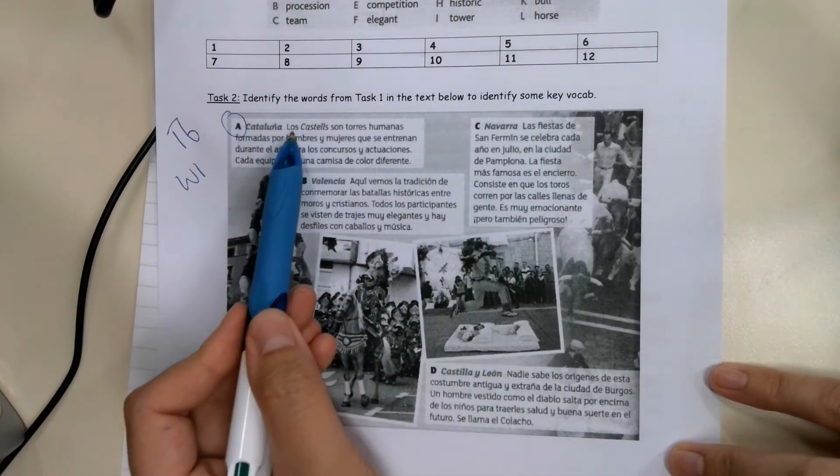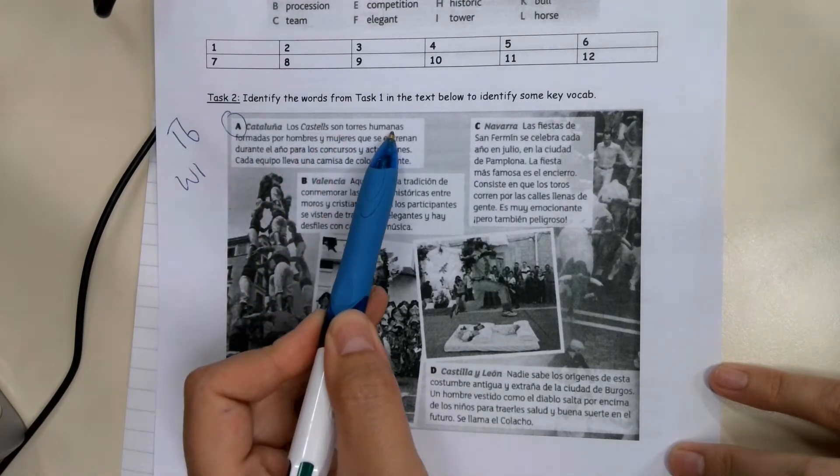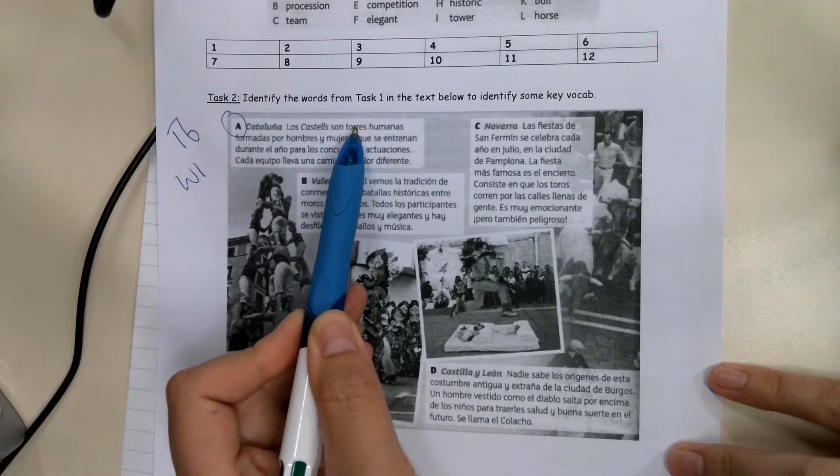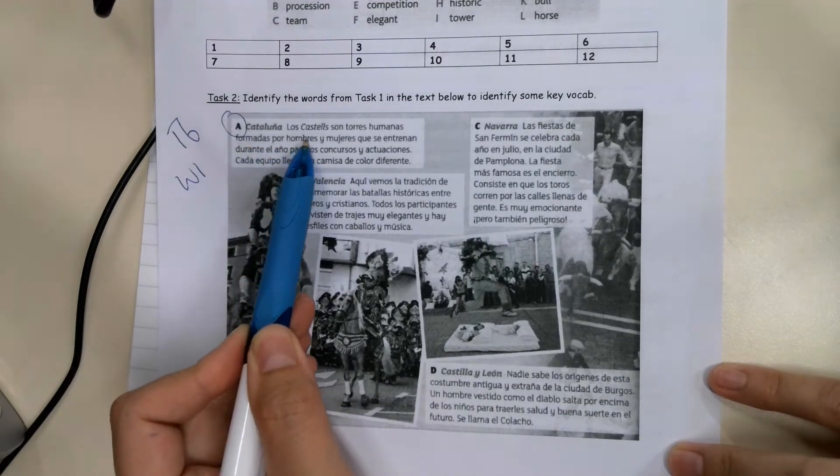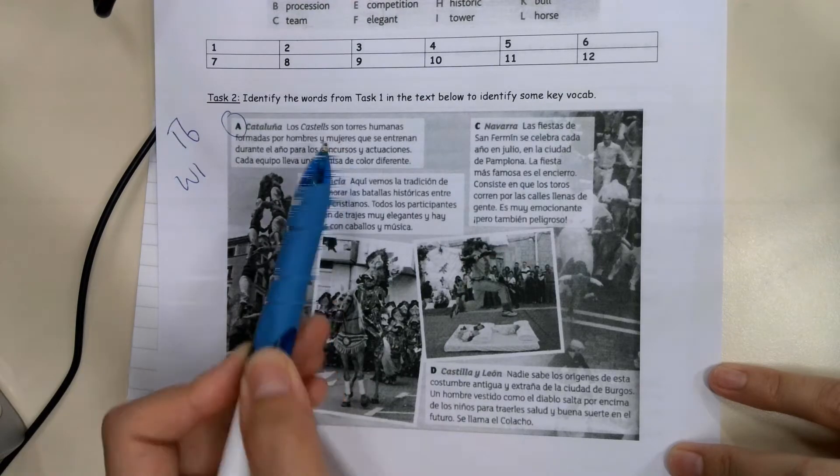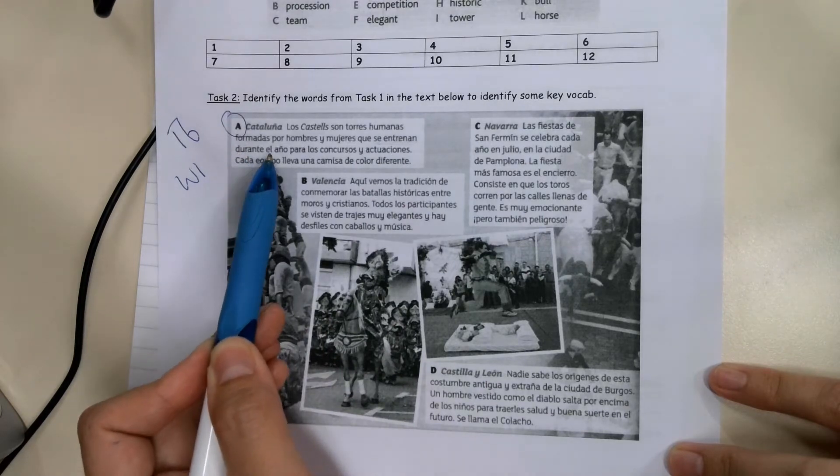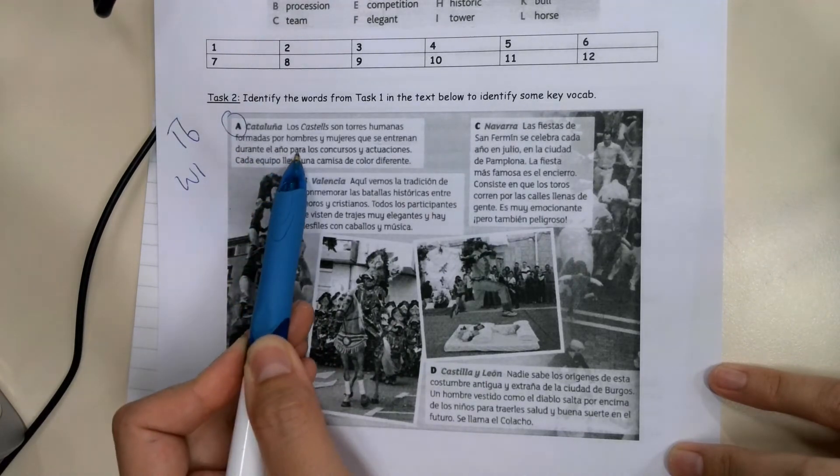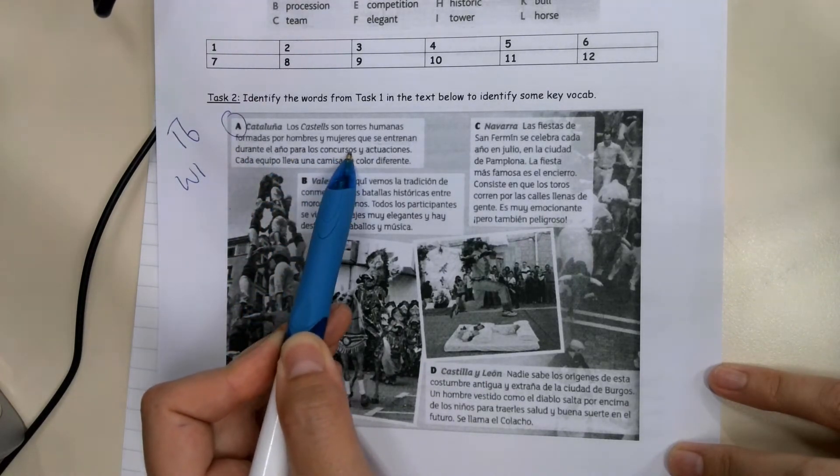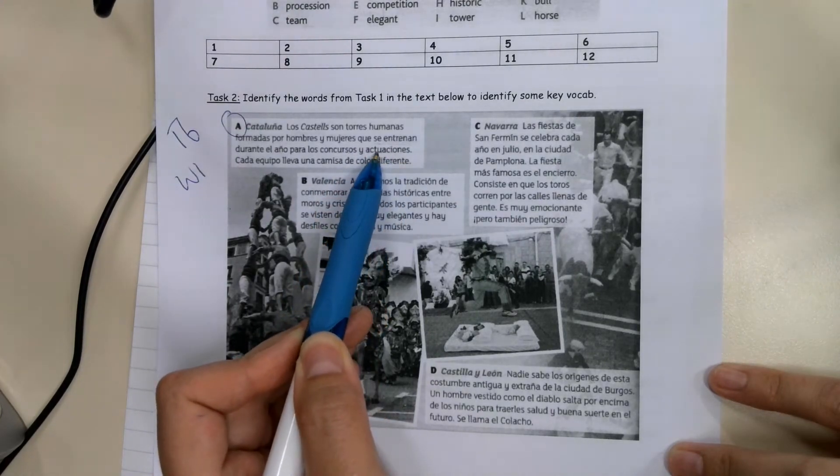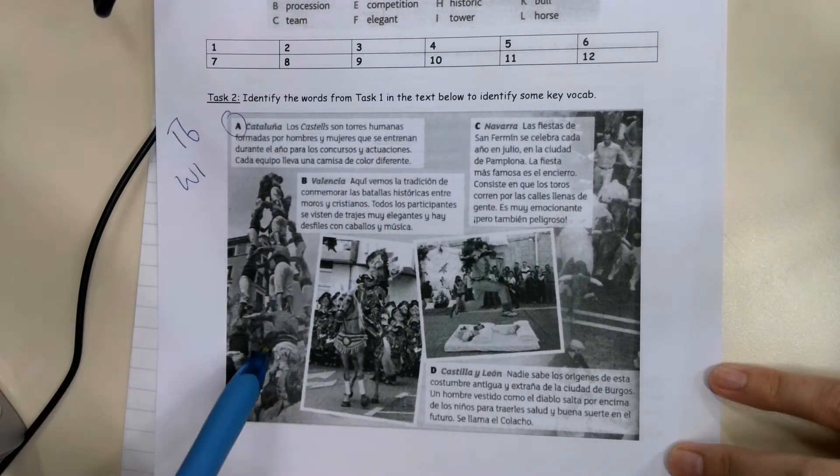So this first one happens in Catalonia. Catalonia is in the northeast of Spain, that's where Barcelona is located. And that's what this image is referring to. The name of the festival is Los Castells. The reason it looks a bit weird is because the name will be in Catalan, which is a slightly different language with elements of French in it. They have their own language because they want independence from the rest of Spain. So Los Castells son torres humanas, they are human towers formed of men and women that train for a year for competitions and performances.